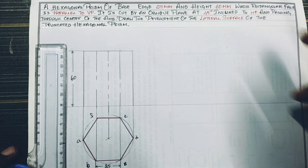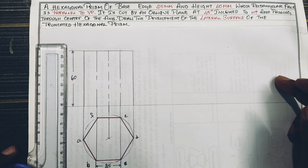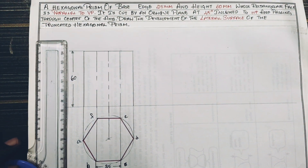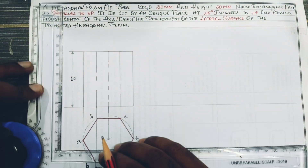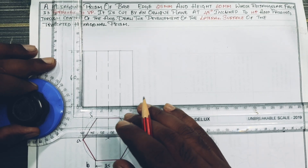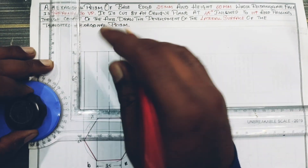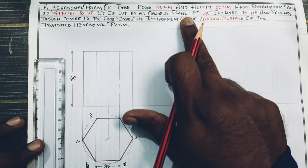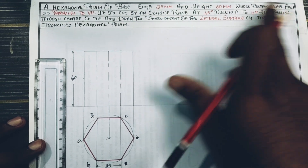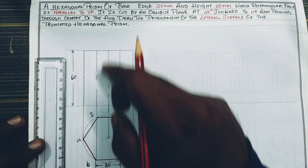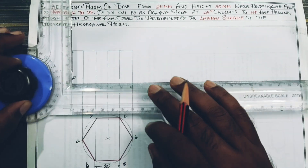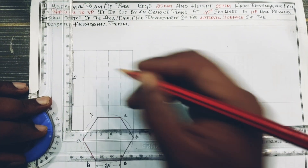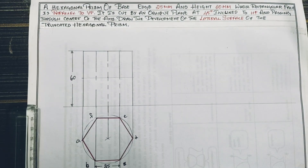If we draw VP and HP, it will be the center of the axis. So height is the center of the axis. Total height is 60, and it will be 30. So it is cut by a plane, 45 degrees inclined to HP, and passing through the center of the axis. This axis will be 30, so this is 30. So here is the 45 degree angle.